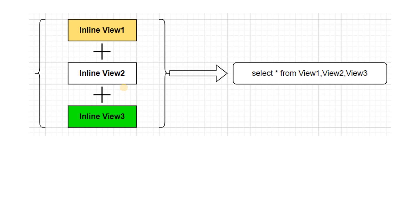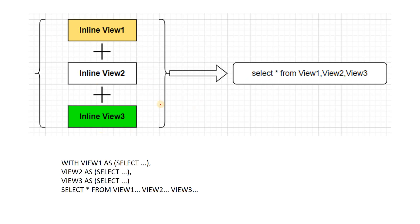As a pictorial representation, we can say we are having a couple of inline views. Inline views means we are defining the view in the same query where we are using it — inline view 1, inline view 2, inline view 3 and so on. When we define the view in that particular query itself, it acts like a temporary view. So select star from view 1, view 2, view 3 — you can do some operations on these views and get the final result out of the select query.